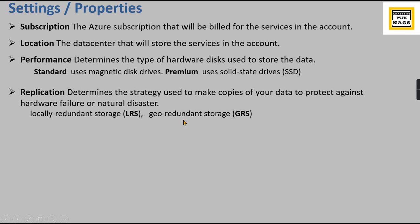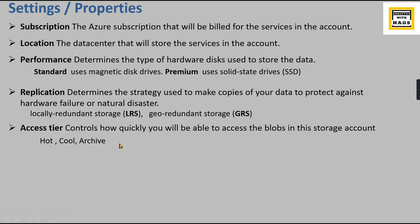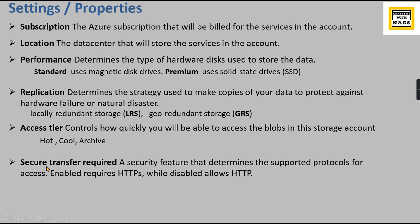If you choose a different geography for replication, there will be latency during a failover because data has to be read from that remote location. By default it is Local Redundant Storage. Access Tier applies to blob storage and controls how quickly you can access blobs — Hot means frequently accessed, Cool means accessed less frequently, and Archive means not accessed for more than 180 days.